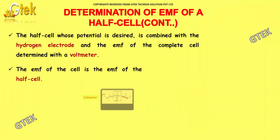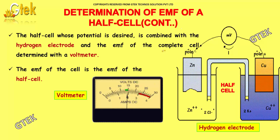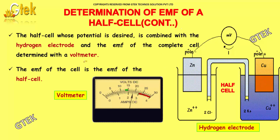The half cell whose potential is desired is combined with the hydrogen electrode, and the EMF of the complete cell is determined with the voltmeter. The EMF of the cell is the EMF of the half cell.